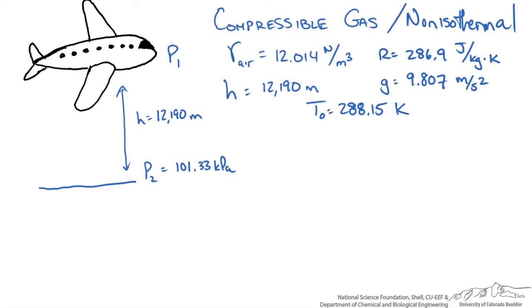For our non-isothermal case we have a relationship between the pressure at P1 and P2 using the following relationship, again derived in another video. Where here T naught is our temperature at sea level. Again we are using g our gravitational constant, R our gas constant. We have this new term beta which is known as the lapse rate.